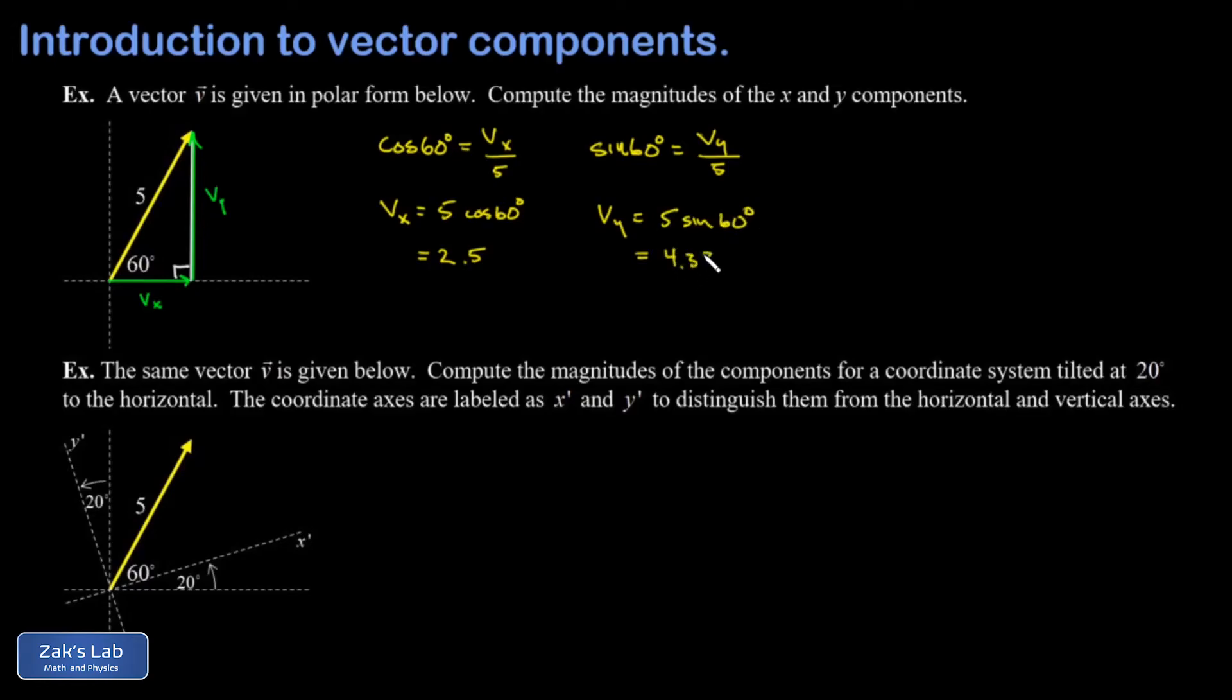Before we move on I want to point out that that x component was found from taking the hypotenuse multiplied by the cosine, and the y component was found by multiplying the hypotenuse times the sine. It's very common in physics to just jump straight to this answer instead of going all the way back to the cosine being the adjacent over the hypotenuse and similar for the sine function. So we're typically going to streamline in that way and I'll illustrate that in the second example.